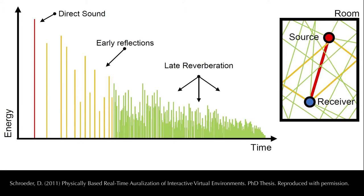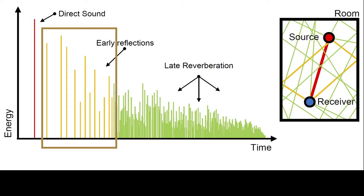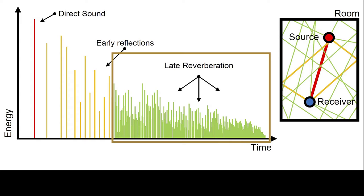On a graph of sound level against time, an impulse like a clap or a gunshot will first generate a spike of direct sound, which is followed by some fairly sparse early reflections from the first few surfaces it encounters. These give the listener clues about the size and shape of the space. As the reflections are themselves reflected, a diffuse late reverberant field builds up in which it becomes impossible to perceive individual reflections. The reverberant tail gradually decays in level as energy is absorbed.